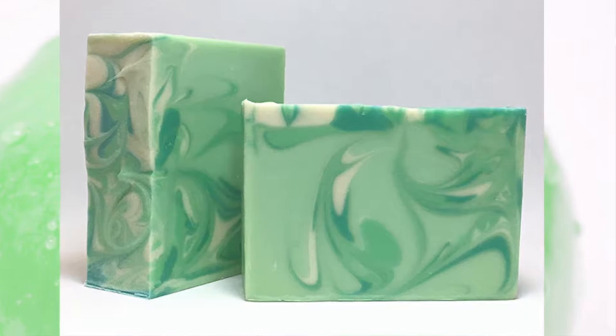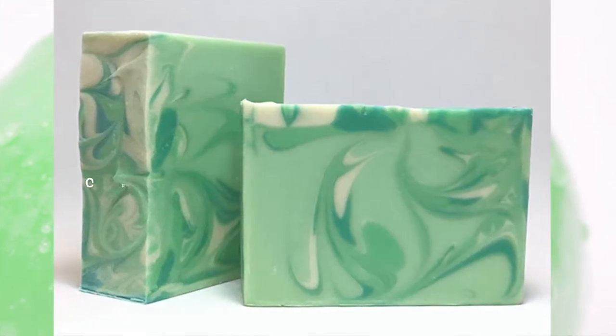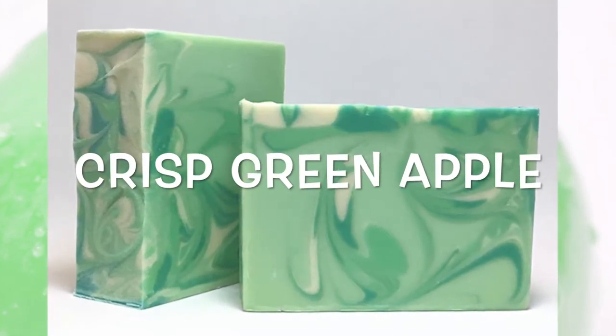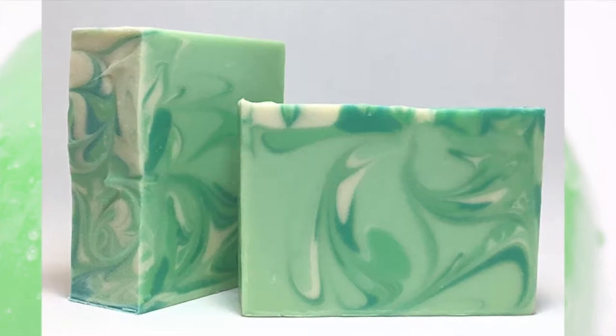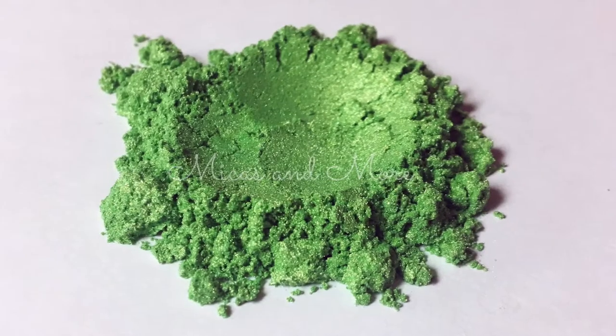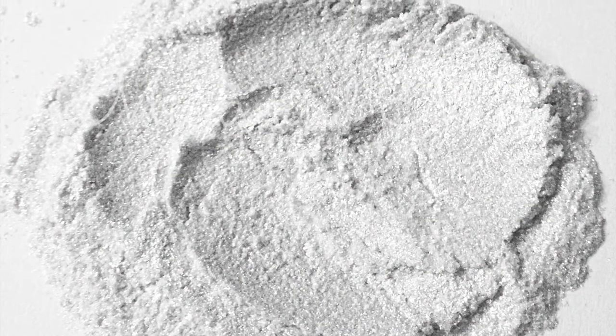Hi soapy friends, it's Steph from Micas and More. I'm making cold process soap with Crisp Green Apple fragrance oil. I'm using two ratios of Apple Green mica, Fruit Green mica, White Satin mica, and a little Stellar White mica.